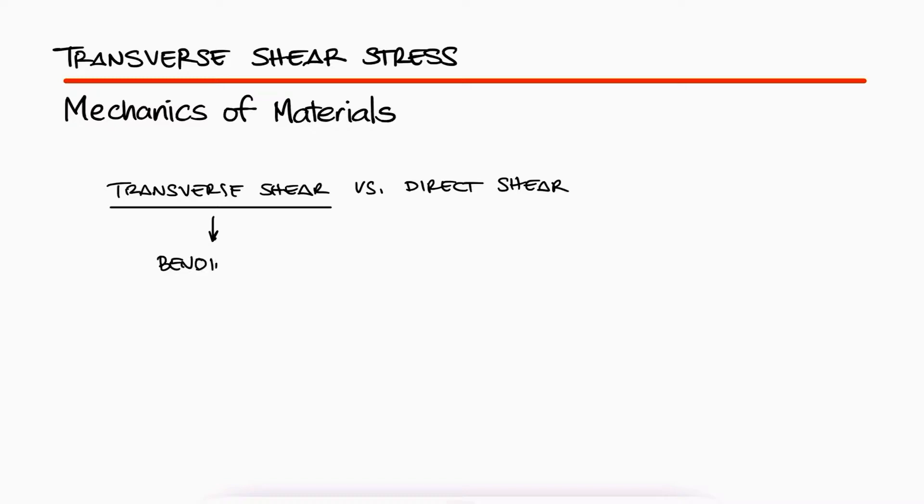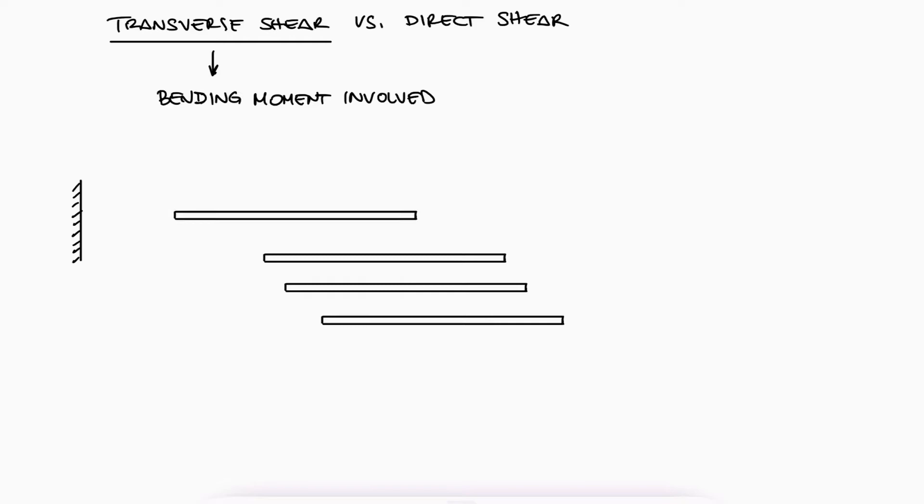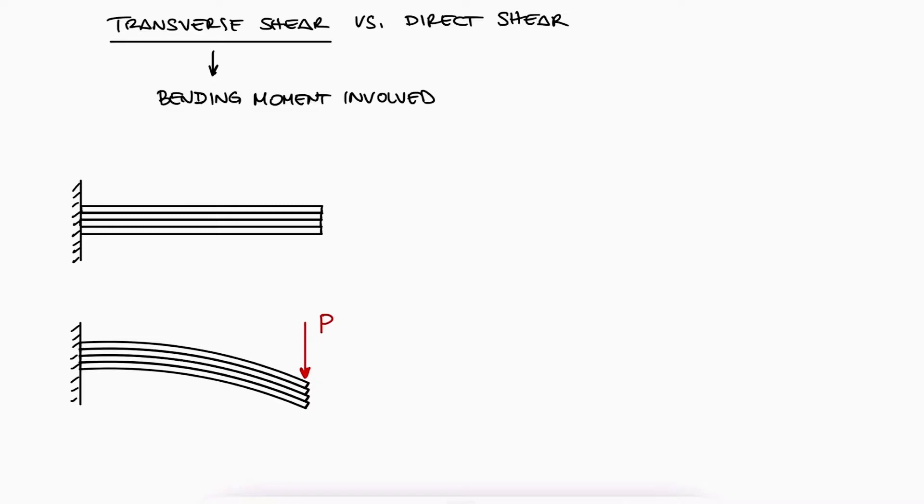Transverse shear is the type of shearing stresses that arise from beams subject to a bending moment. If we look at a cantilever beam that is made of planks that have been piled on top of each other, and if we subject the free end to a point load, we would see that the planks slide with respect to each other.